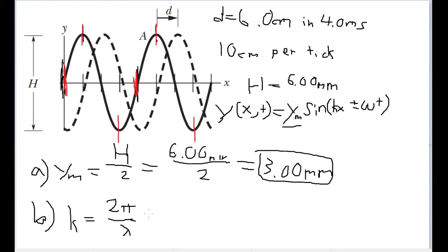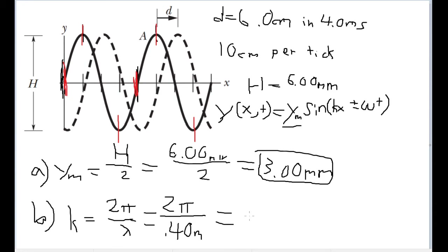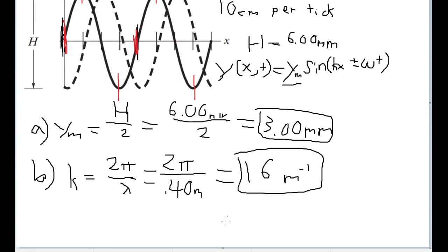With a wavelength of 40 centimeters, we plug that into k = 2π/λ. Converting to base SI units, 40 centimeters equals 0.40 meters. Plugging this into the calculator, we get an angular wave number of 16 radians per meter, or 16 reciprocal meters. That is our angular wave number.